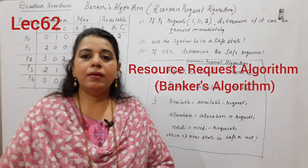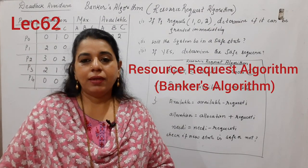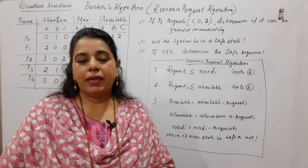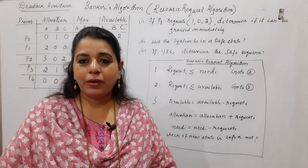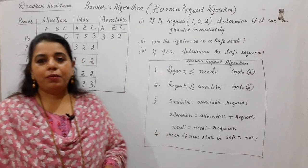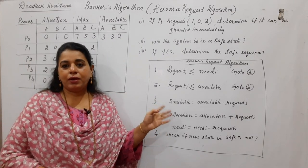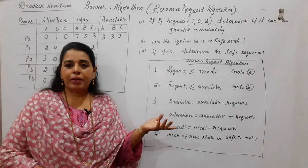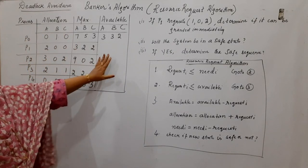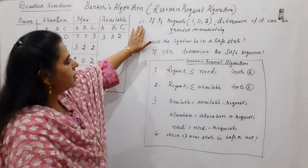Hello viewers, welcome back to my channel. The topic of discussion for this session is the resource request algorithm, which is under the heading Banker's Algorithm, which in turn is under the heading deadlock avoidance. A numerical can be asked like the previous one — it can be asked for seven to eight marks. What is given in the problem statement is this table.